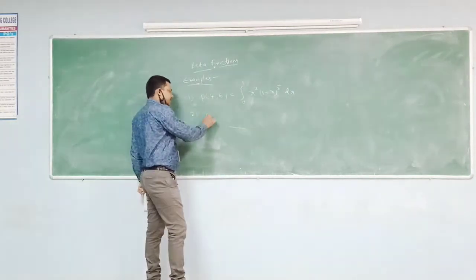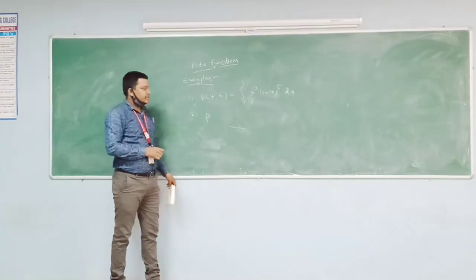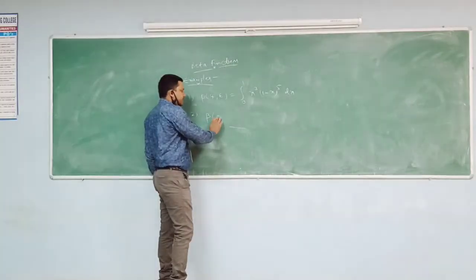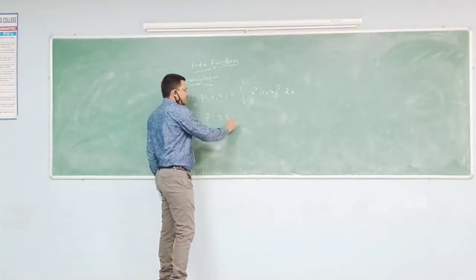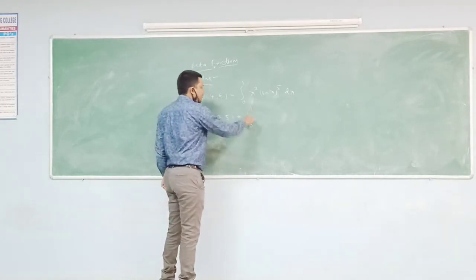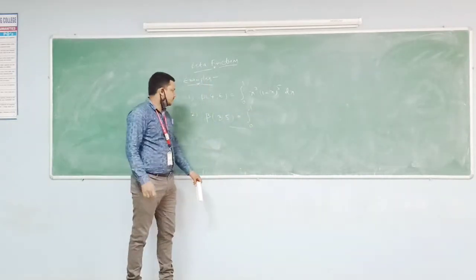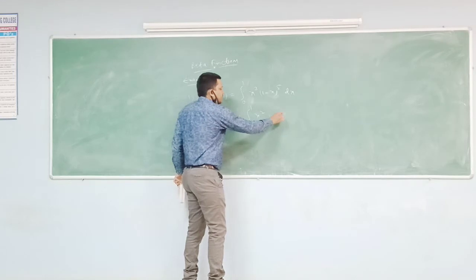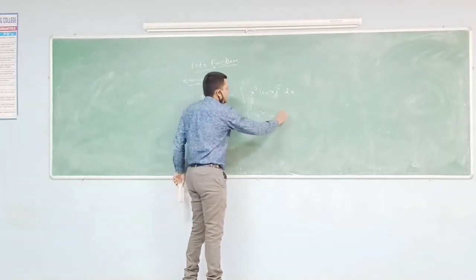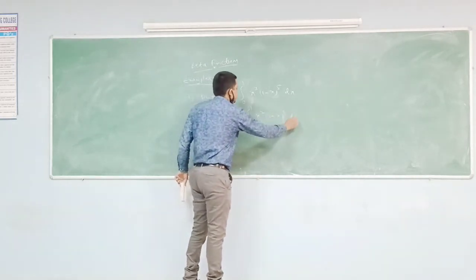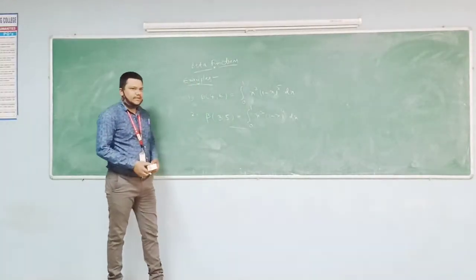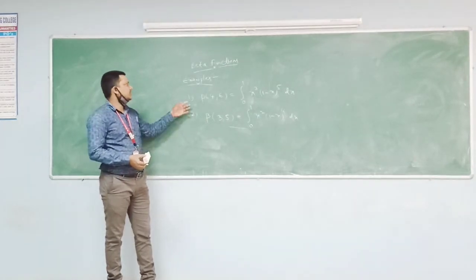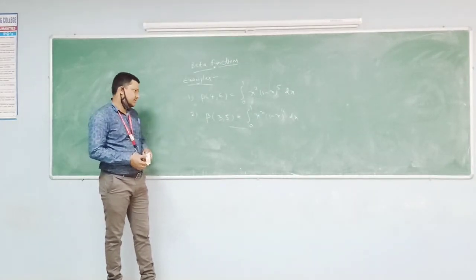Similarly, we can take another example: beta of 3 comma 5, which is the integration of 0 to 1 of x power 2 into 1 minus x whole power 4 dx. In this manner we define the examples of beta function.